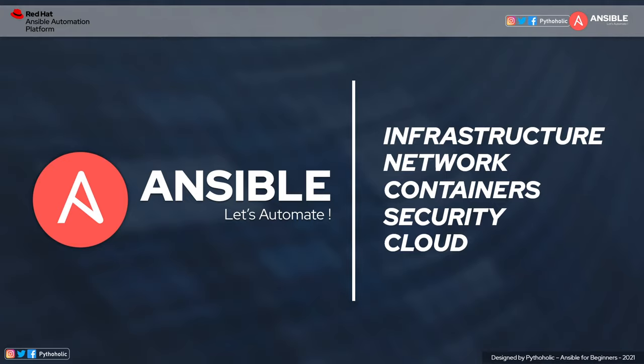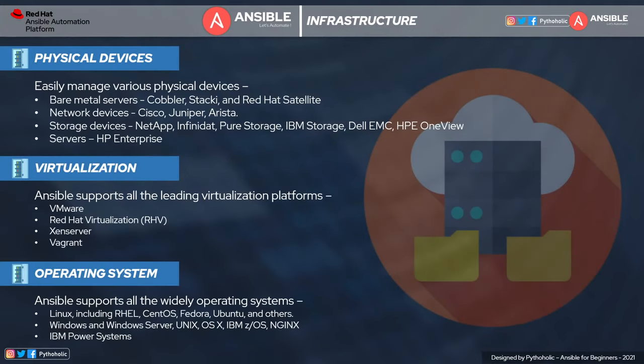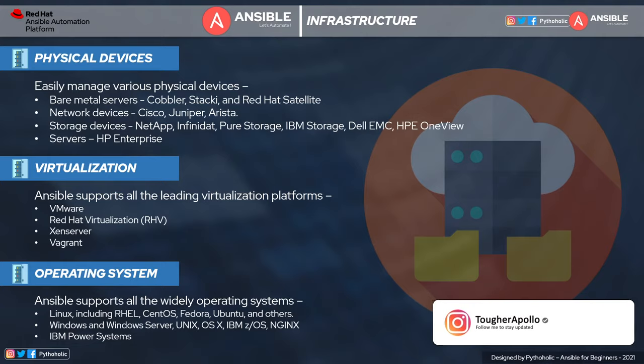With Ansible, you can manage physical devices such as bare metal servers with Cobbler stack and Red Hat Satellite, network devices such as Cisco, Juniper, or Arista, and storage devices like NetApp and HP Enterprise servers. For virtualization, Ansible supports leading platforms such as VMware, Red Hat Virtualization (RHV), Xen Servers, and Vagrant. On the operating system side, Ansible supports all widely used operating systems including Linux, RHEL, CentOS, Fedora, Ubuntu, Windows and Windows Servers, Unix, OSX, IBM, NGINX, and IBM Power Systems.